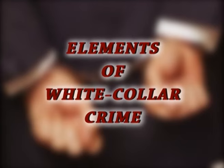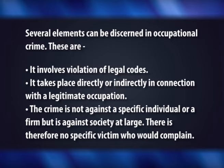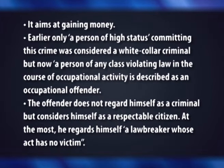Let us learn about the different elements of white collar crimes in our next section. Several elements can be discerned in occupational crime. First, it involves violation of legal codes. Second, it takes place directly or indirectly in connection with a legitimate occupation. Third, the crime is not against a specific individual or firm, but against society at large. There is therefore no specific victim who could complain. It aims at gaining money.